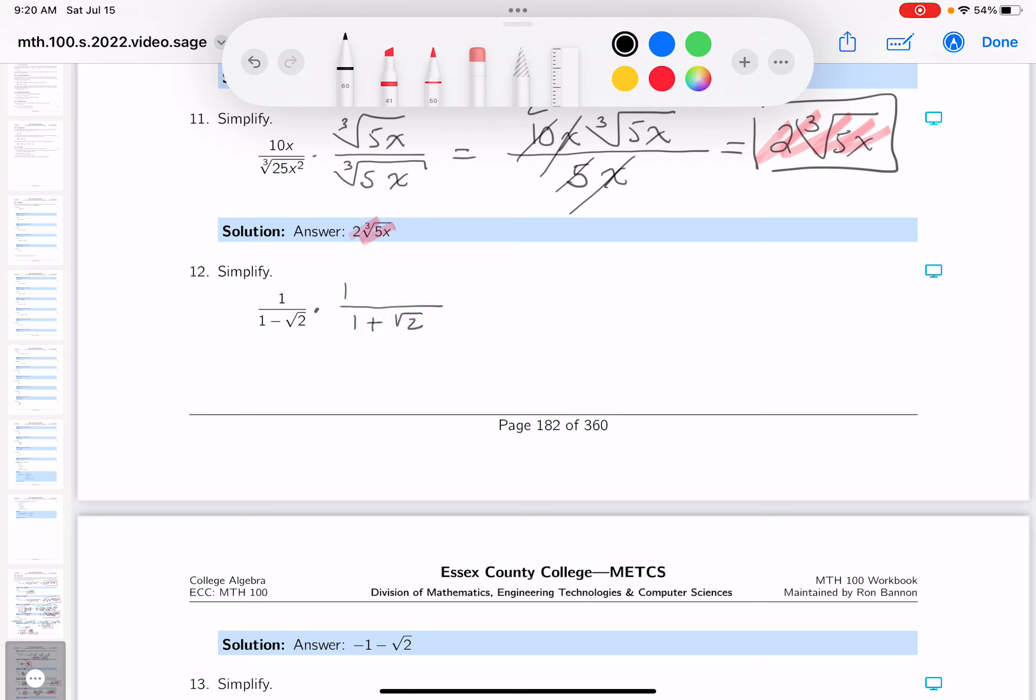1 plus the root of 2. If you multiply the bottom by 1 plus root 2, you multiply the top by 1 plus root 2.